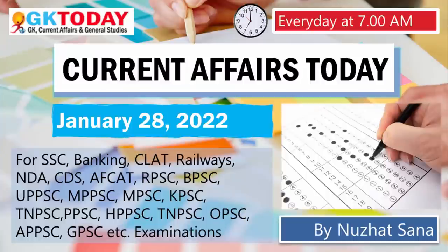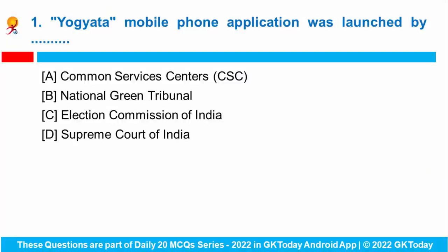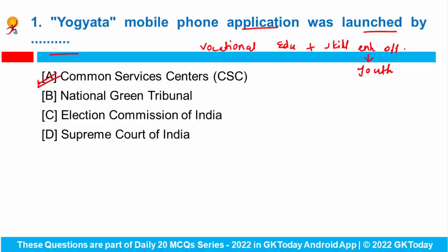Good morning everyone, welcome back to GK Today. Today we will be discussing the most important MCQs for 28th of January 2022. Starting with the very first question: the Yogyata mobile phone application was launched by the Common Services Centre. The aim is to provide vocational education and skill enhancement opportunities to the youth and other citizens in rural areas.